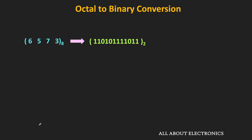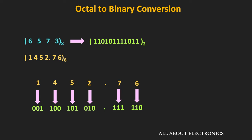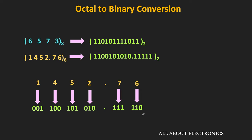Let's take another example that also contains a fractional part. We write down each octal digit and replace it by the equivalent 3-bit binary number: 1 becomes 001, 4 becomes 100, 5 becomes 101, 2 becomes 010. After the binary point, 7 becomes 111 and 6 becomes 110. When writing the overall binary equivalent, the two leading zeros on the left can be neglected as they carry no value, and similarly the trailing zero after the binary point can also be neglected.